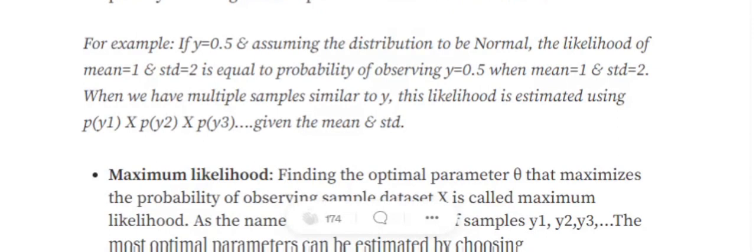mean equals to 1 and standard deviation equals to 2. In this case, the likelihood of what we are trying to achieve is: given the mean and standard deviation of a normal distribution, what is the probability of getting a point y equals to 0.5?